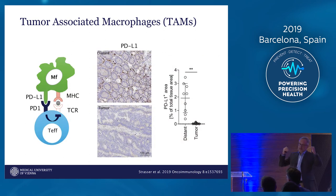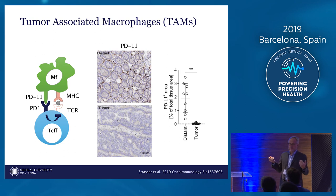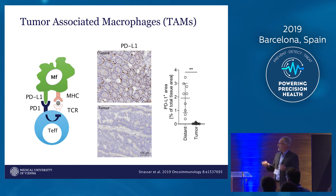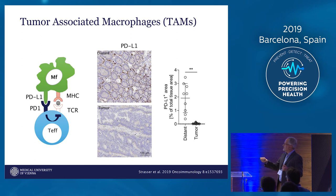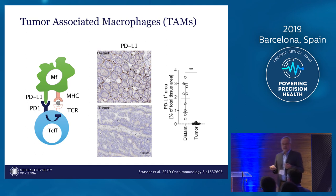Another mechanism to inhibit the immune response is the expression of PD-L1. This checkpoint molecule is not only expressed by macrophages — many tumors express PD-L1 in melanoma and lung cancer, but not in colorectal cancer. As you can see here, not only does the tumor not express PD-L1, but also the macrophages. The macrophages in the normal mucosa express PD-L1 at a high level, but here in the tumor this PD-L1 expression is nearly gone.